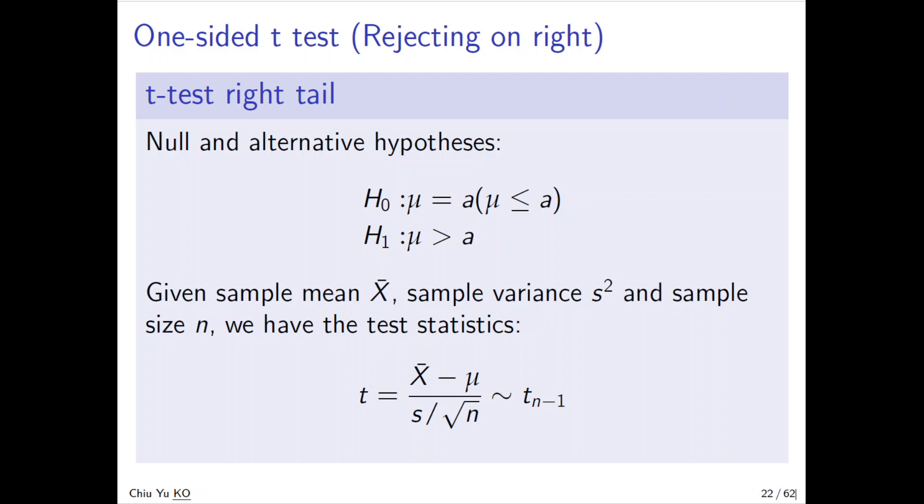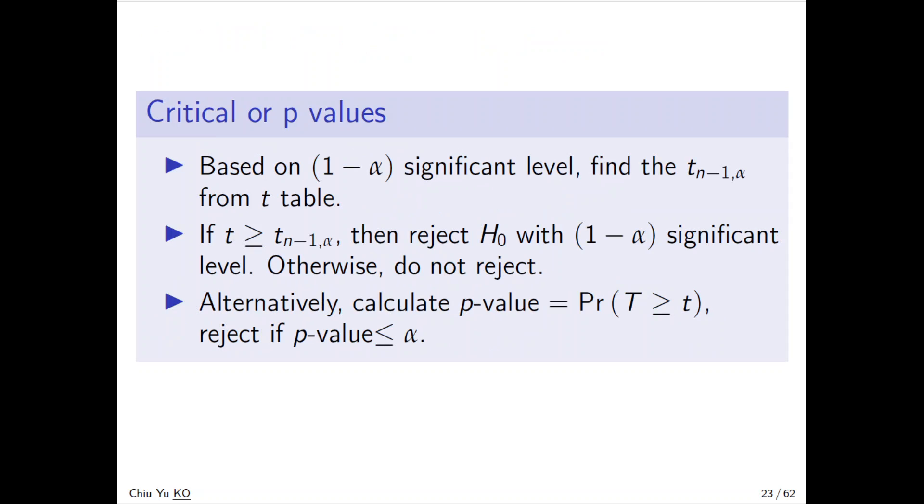Now with t-tests - the right tail, left tail, and both tails - it's all very similar, but now we have sample variance s² instead of σ². We've talked about the t-distribution: (x̄ - μ)/(s/√n) follows t_{n-1}. We learned this when we discussed estimation. This is something we've already talked about, so everything is the same except z becomes t with n-1 degrees of freedom.